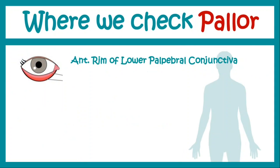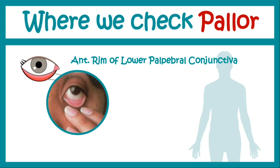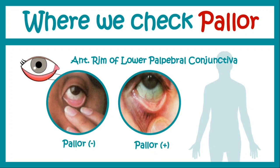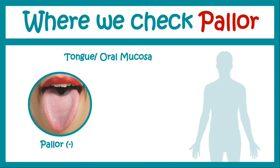Where do we check pallor? One region is the anterior rim of the lower palpebral conjunctiva. The lower palpebral conjunctiva has an inner rim — the posterior rim — and an outer rim — the anterior rim. Pallor is checked at this anterior or outer rim. In the normal conjunctiva image, the anterior rim shows no paleness, whereas in the right-hand image a pale anterior rim is visible — this is a pallor-positive case.